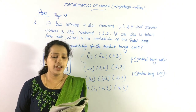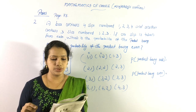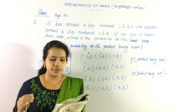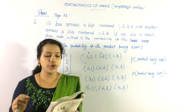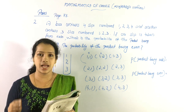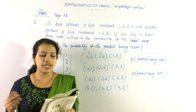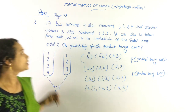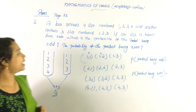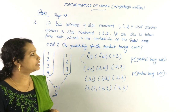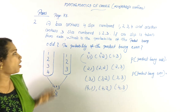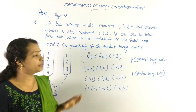Question number 3. One box contains slips numbered 1, 2, 3, 4 and another box contains 3 slips numbered 1, 2, and 3. If one slip is taken from each, what is the probability of the product being odd and the probability of the product being even?